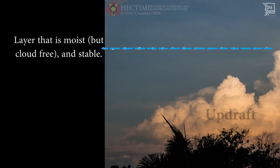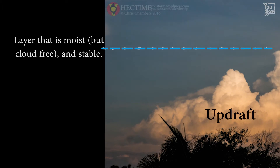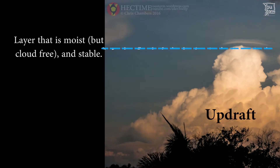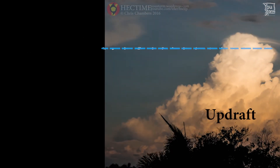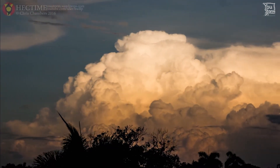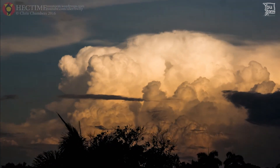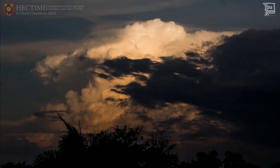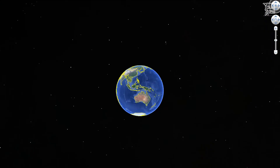And finally, we need that updraft — and preferably a very vigorous one. So we have an idea about our ingredients for our Pileus dish. How are we going to find out when these ingredients are going to occur together so that we can actually predict the cloud?